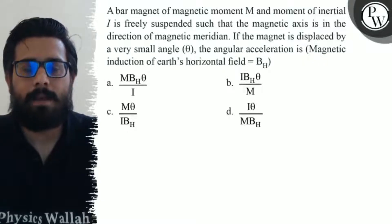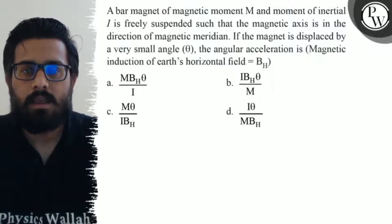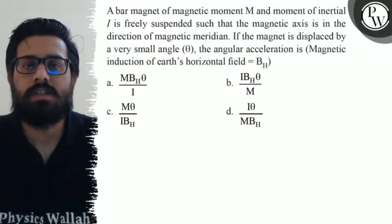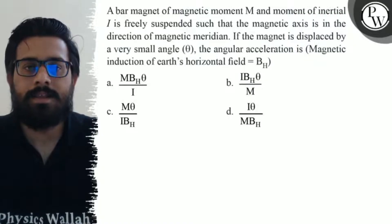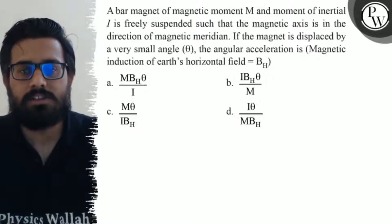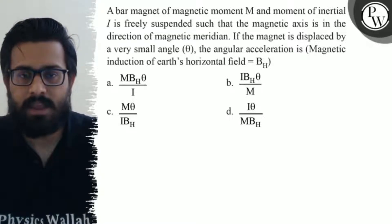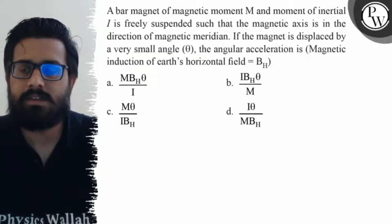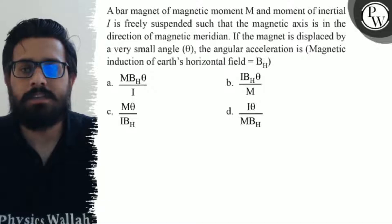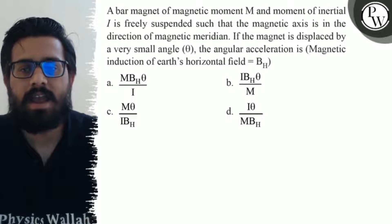Let's see the question. A bar magnet of magnetic moment M and moment of inertia I is freely suspended such that the magnetic axis is in the direction of the magnetic meridian. If the magnet is displaced by a very small angle theta, the angular acceleration is given. The horizontal magnetic induction of the earth's field is given as Bh. The options are: (a) MBh·θ/I, (b) IBh·θ/M, (c) Mθ/(I·Bh), and (d) Iθ/(M·Bh).